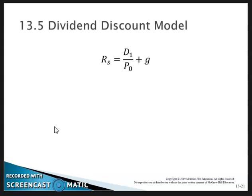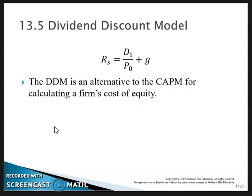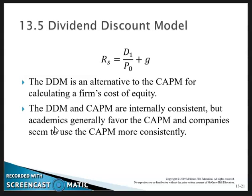The Dividend Discount Model: the required rate of return equals the dividend yield — next year's dividend divided by the current price — plus the growth rate. The DDM is an alternative to the CAPM for calculating a firm's cost of equity. The DDM and CAPM are internally consistent, and academics generally favor the CAPM. Companies also seem to use the CAPM more consistently.